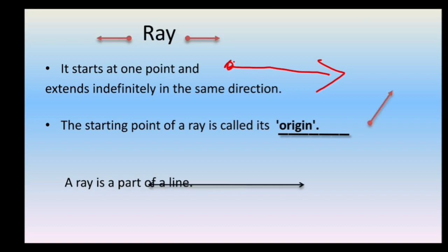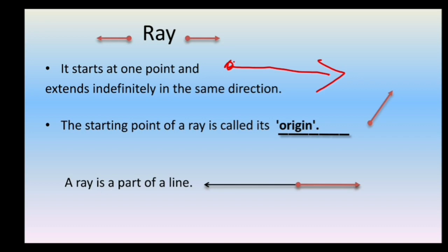A ray is a part of a line. When we break a line into two parts, we get two shapes. We can call these shapes as rays.